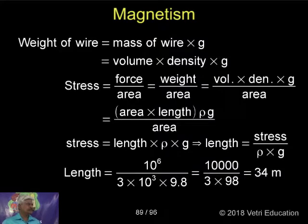Volume times density times g per area. That is equal to area times length. Volume can be written as area times length, so density ρ times g by area.